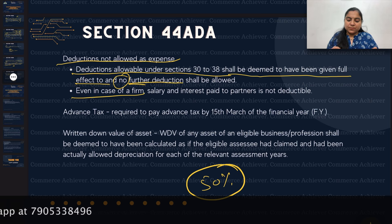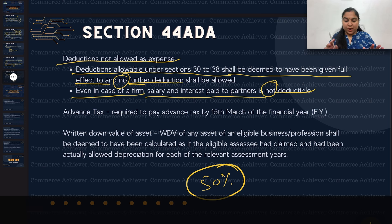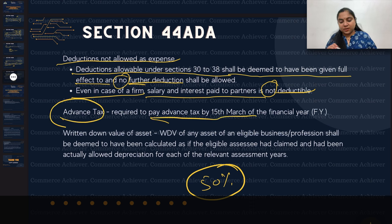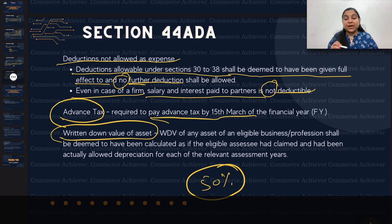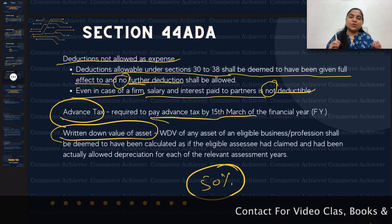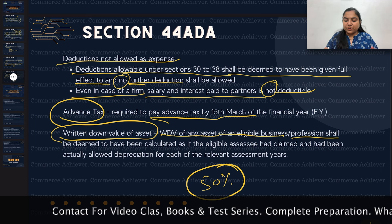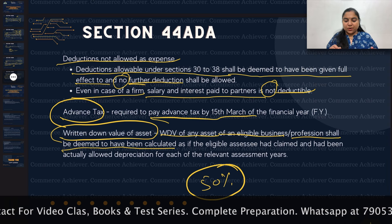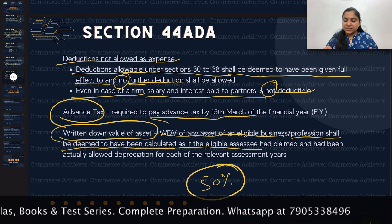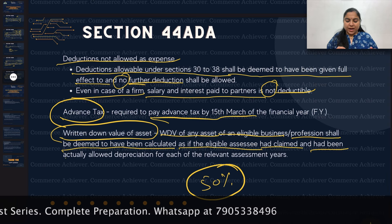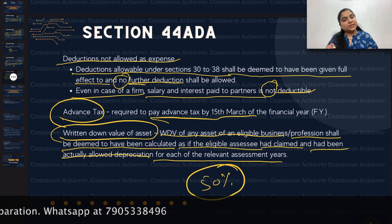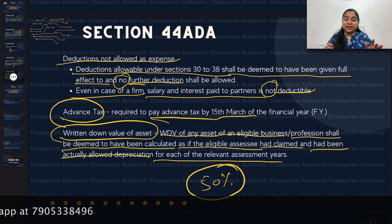Even in the case of a firm, salary and interest paid to a partner are not deductible. Advance tax must be paid by 15 March. For WDV of the asset: you compute normally — apply depreciation and calculate WDV. WDV of any asset of an eligible profession shall be deemed to have been calculated as if the eligible assessee had claimed and had been actually allowed depreciation for each of the relevant assessment years.